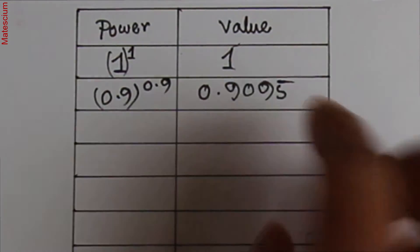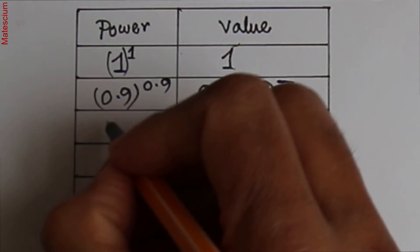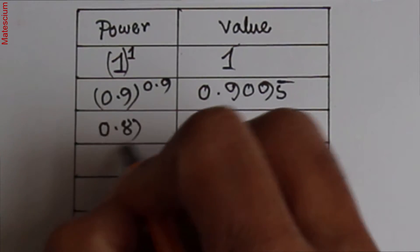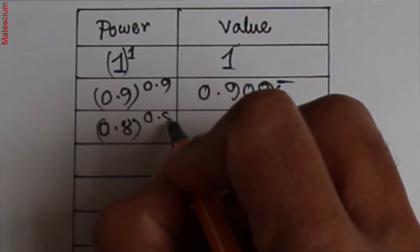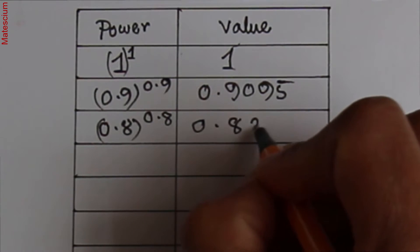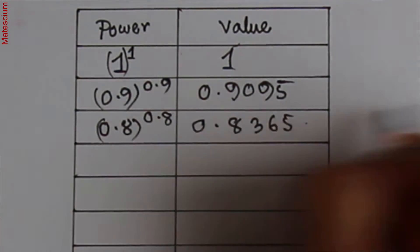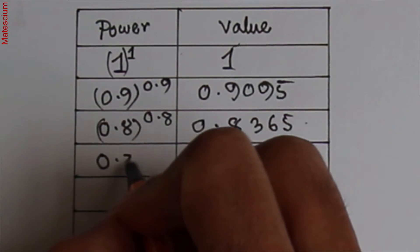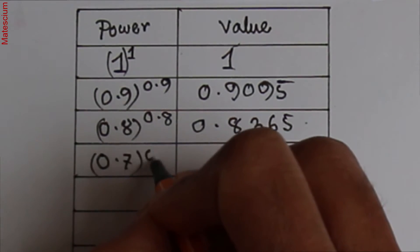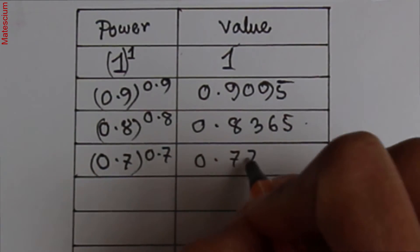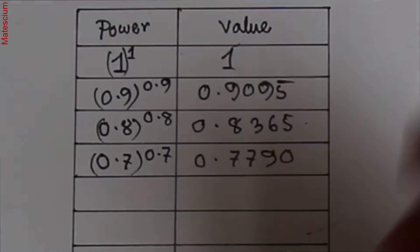And then I am reducing this value to 0.8 to the power 0.8. This value is 0.8365 and so on. And then I am writing 0.7 to the power 0.7, which is 0.7790. Look at here, the number is reducing. The value is reducing, right?